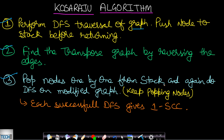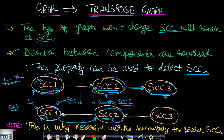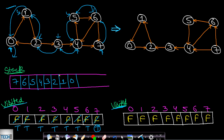For the third step, we pop nodes one by one from the stack and perform DFS on the transposed graph. Each successful DFS call that starts from an unvisited node gives us one strongly connected component. Since the edges are reversed, we cannot traverse from one SCC to another without manually popping the next unvisited node from the stack.